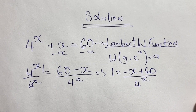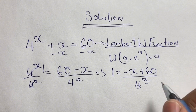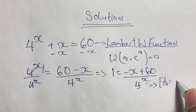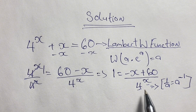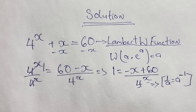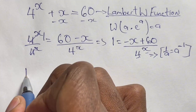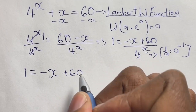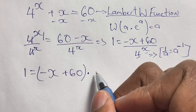Now 4 to the power of x, using the law of indices, can be rewritten as 4 to the power of negative x being multiplied. So we rewrite the equation as 1 is equal to negative x plus 60 in brackets times 4 to the power of negative x. This uses the rule that 1 over a to the power of x equals a to the power of negative x.